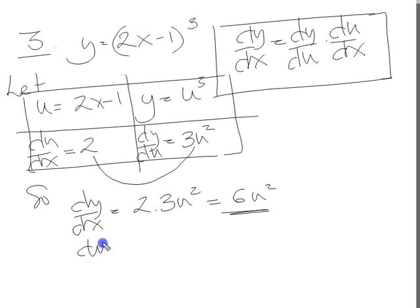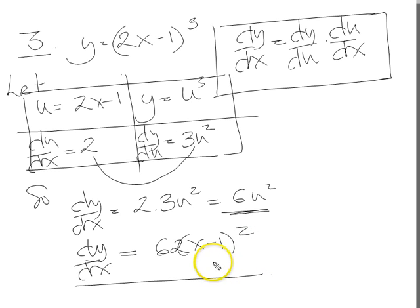So then at the very end, we can put back in what u is equal to. So dy dx equals 6 lots of u squared. So something is 2x minus 1 squared. There we go. That's it. Job done.